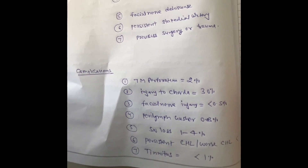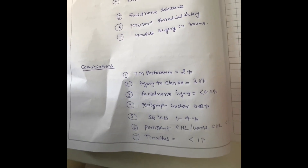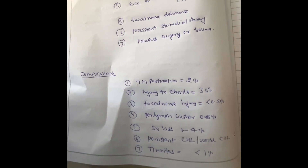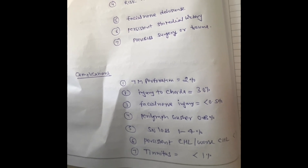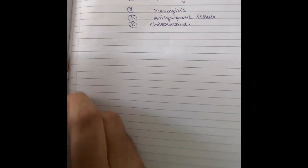Complications of stapedectomy surgery include: the most common complication is injury to the chorda tympani in about 30 percent of cases; the second most common is temporary tympanic membrane perforation; facial nerve injury is rare at about 0.5 percent of cases; perilymph gusher; sensorineural hearing loss; reparative granuloma — which can be treated with steroid drops or fibrin glue; meningitis; and perilymphatic fistula — which can be closed with connective tissue.